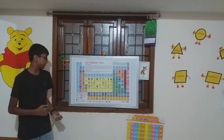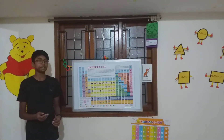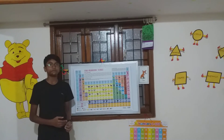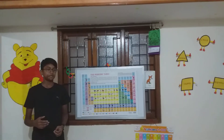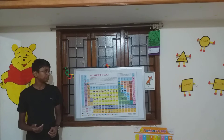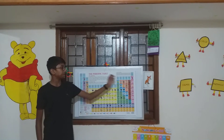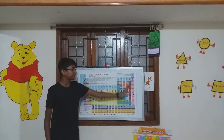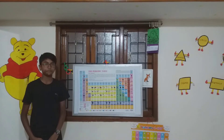Next come noble gases. Noble gases are another family of elements. They are present in the far right column in the periodic table.